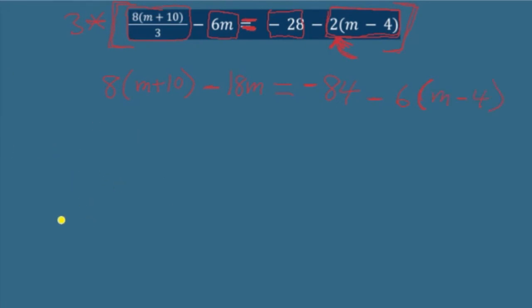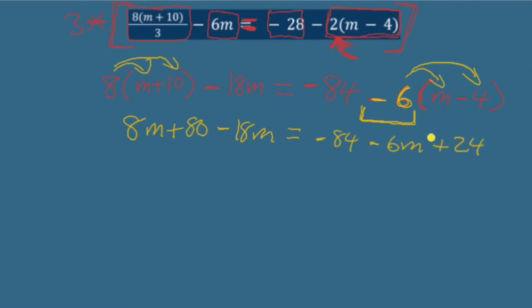And then, you're just doing the steps that we've done previously. We're going to distribute. We're going to distribute over here. Keep in mind this when distributing. Minus signs stay with the number that follows them. So, when I distribute here, we've got negative six m's, and we've got negative six times negative four, which is positive 24. The minus sign distributes with the six when we're multiplying.